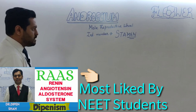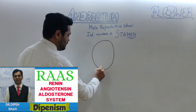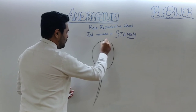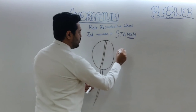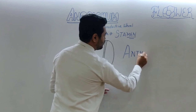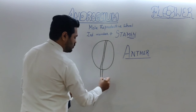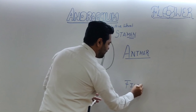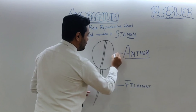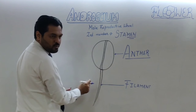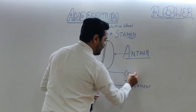The stamen has three components to discuss. The uppermost component is known as the anther. The stalk is known as the filament. The point where the anther and filament connect is known as the connective.